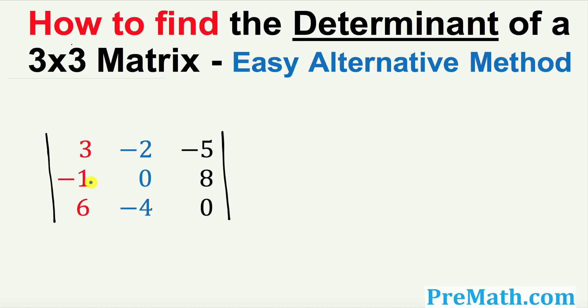So the very first step I want you to do is just go ahead and put down these red and blue columns to the right. Put down 3, negative 1, and 6, and put down the blue column as well just next to it: negative 2, 0, and negative 4. So what I did is simply just copy and paste these two columns over here.